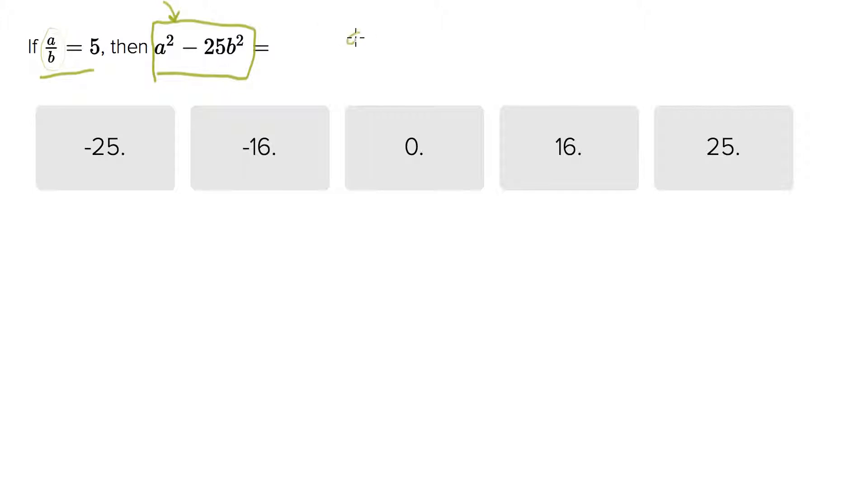One way you could do it is with substitution. You could say, okay, well a must equal 5b, and let's plug that in and see if we get things to cancel out. In fact, let's do it both ways. I'm going to show you a faster way in a second. If a is 5b, we end up with 5b squared minus 25b squared. 5b squared is 25b squared minus 25b squared, which equals zero.